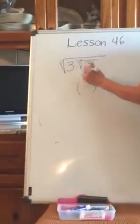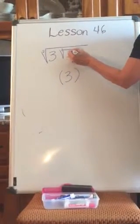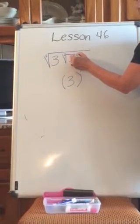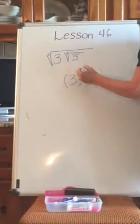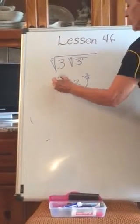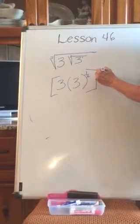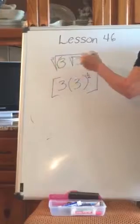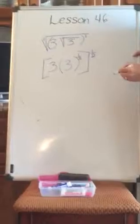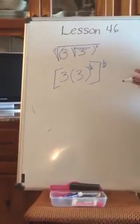I can write this as 3 raised to the 1st power, and this inner radical makes it 3 to the 1 half. The numerator is what it's raised to, and the denominator is the index of the square root. Then the whole radical over 3 is raised to the 1 half as well — this whole term is raised to the 1st, and the denominator is a half.